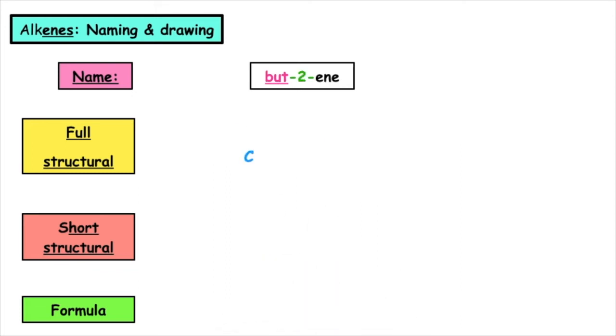For but-2-ene, but tells me I have four carbons. So I draw them in a row. I number my top carbons and bottom carbons. I put a box around the position of carbon number two and put in my carbon to carbon double bonds. I fill out the rest of the bonds and then fill them out with hydrogen atoms.